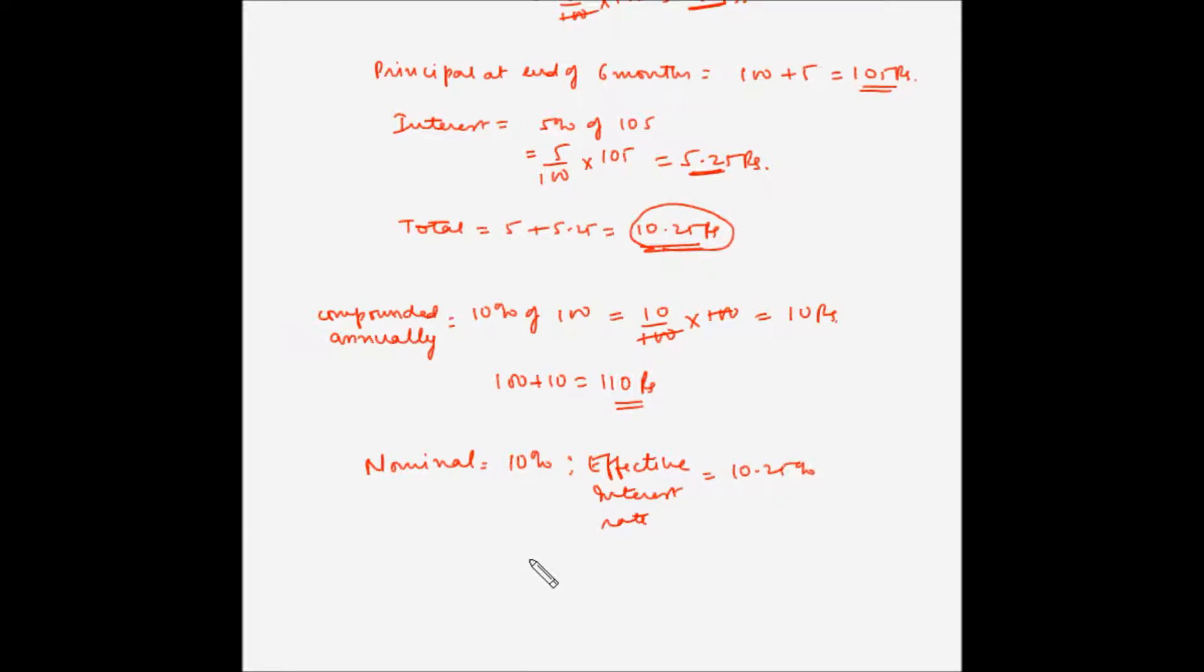Now, point to be noted is that if the compounding period was annual and if the annual interest rate was 10.25% then the interest amount would be 10.25 rupees.